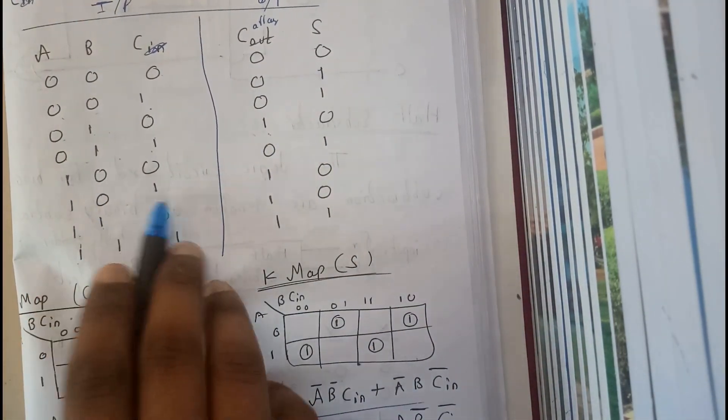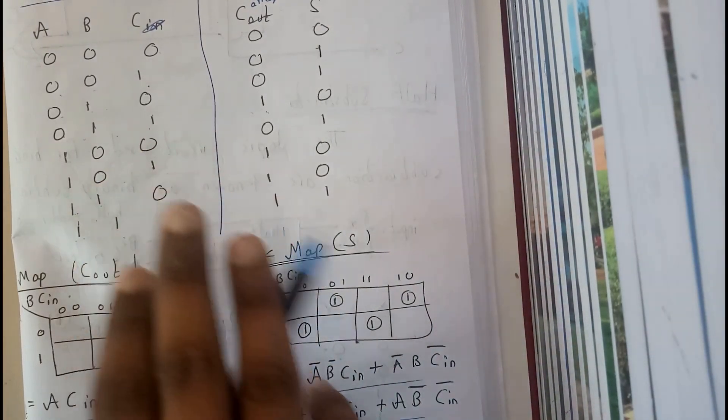So 1, 0, 0, 1. 1, 0, 1, 1, 0. 1, 1, 0, 1, 0. So 1, 1, 1, it is 3. What is the 3 binary code? 1, 1.